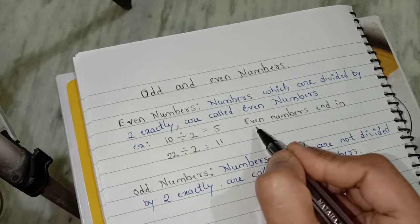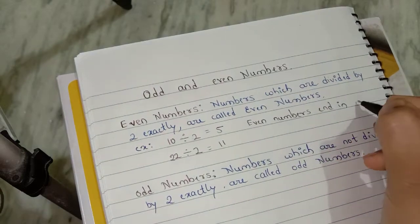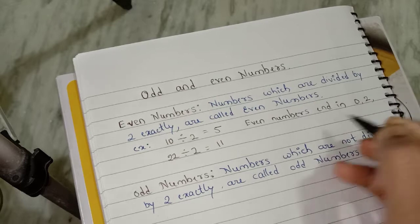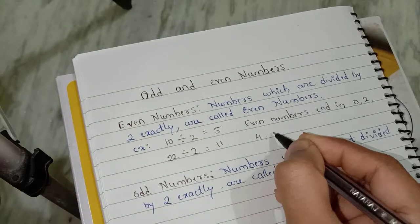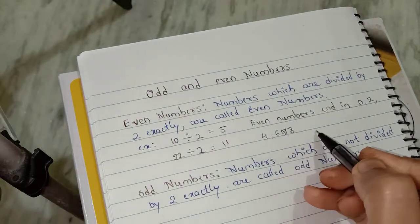Here one more thing. Even numbers ends in 0, 2, 4, 6 or 8.